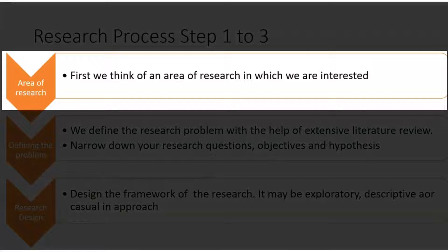The research process starts with the choice of area of interest. First of all, the researcher has to identify the area of his own interest. That area could be any area — for example, it could be psychology, economics, anthropology, mathematics, management, engineering, sciences, or anything. For example, if I want to do research in the education sector, my area of interest would be the education sector. That's the first step to get into a research.